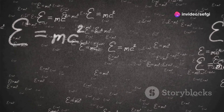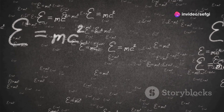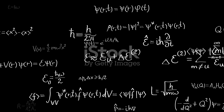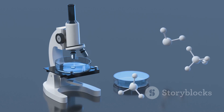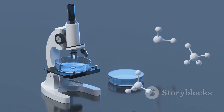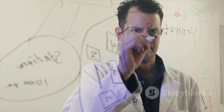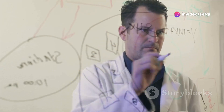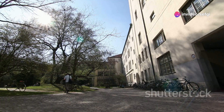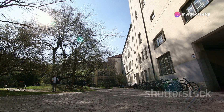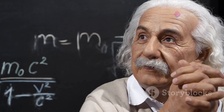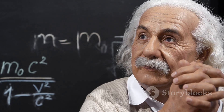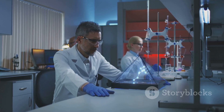Werner Heisenberg was a German physicist born in 1901. He made significant contributions to quantum mechanics, and his work revolutionized our understanding of the micro world. Heisenberg's most famous contribution is the uncertainty principle, introduced in 1927. He studied physics at the University of Munich and was influenced by prominent physicists like Niels Bohr and Max Born.